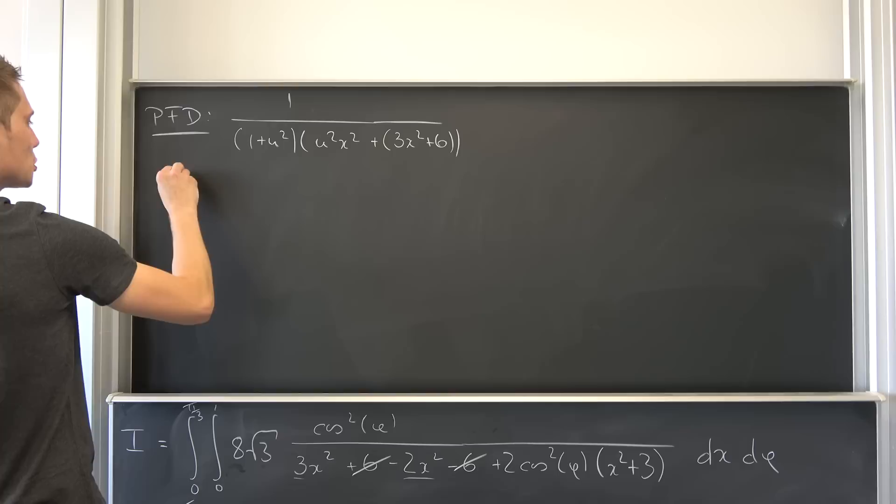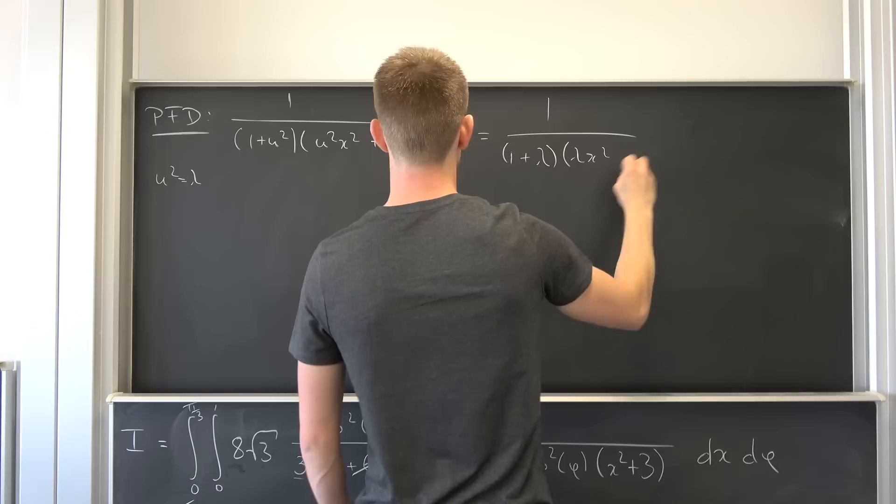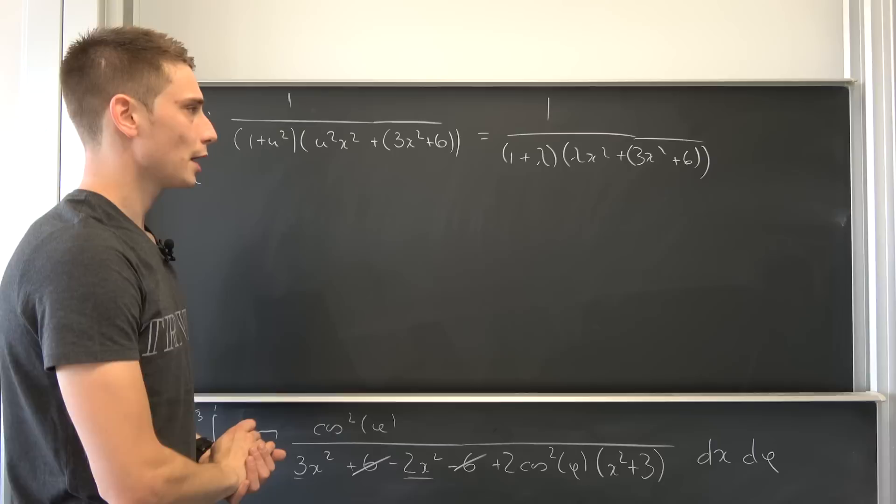So u squared is nothing but lambda, resulting in 1 over 1 plus lambda, making things way easier to be honest. Lambda x squared plus 3x squared plus 6. You will see why I am rewriting this little term like this with parentheses. It makes things also easier.